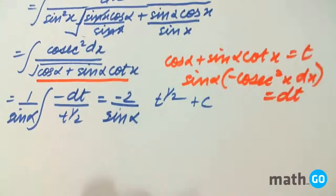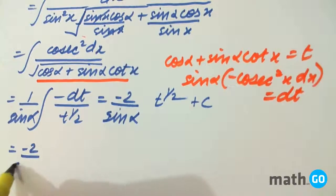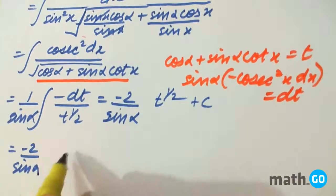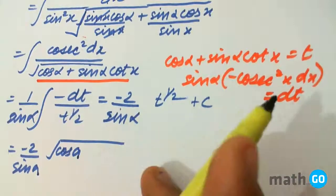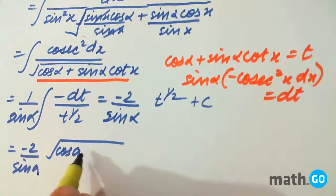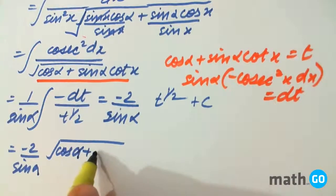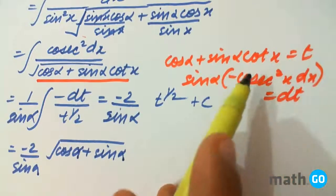Simply put the value of t. Then we get minus 2 by sin a. Cos alpha plus sin alpha into cot x.